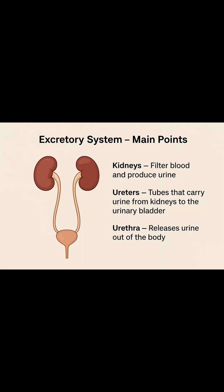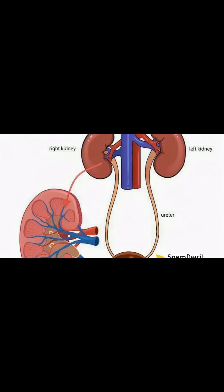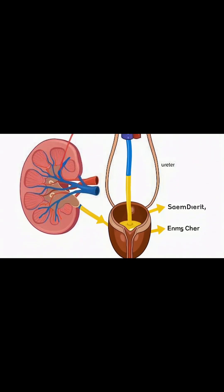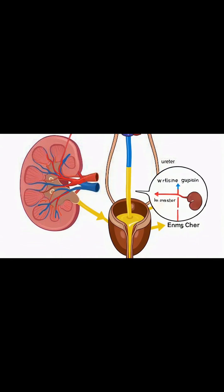In humans, the main excretory organs include: kidneys, which filter blood and produce urine; ureters, tubes that carry urine from kidneys to the urinary bladder; and the urinary bladder, which stores urine temporarily.